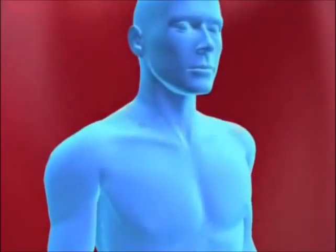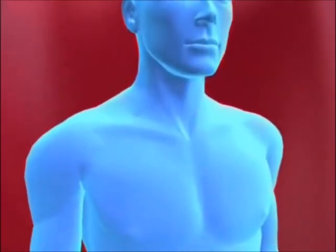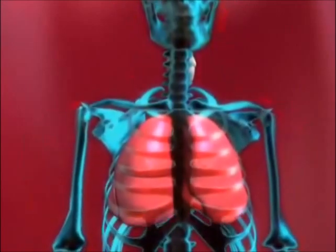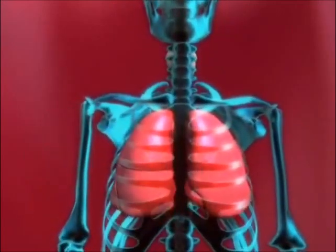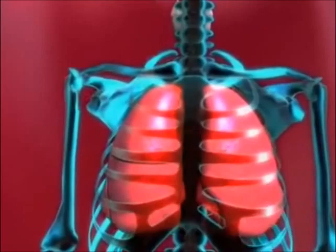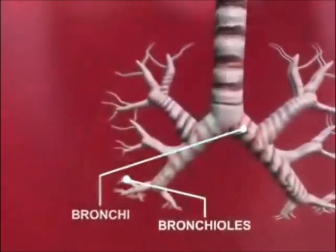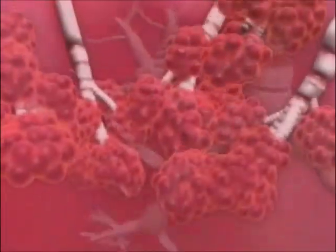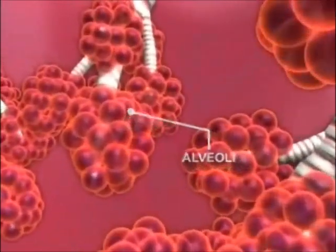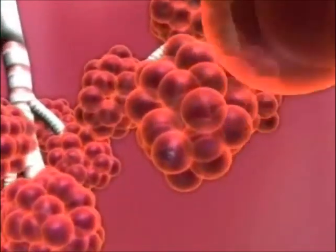During breathing, the air inhaled through the nose and mouth enters the respiratory passages. The air entering the respiratory system passes through the trachea, then splits into the bronchi, bronchioles, and finally enters tiny sacs called alveoli, where the exchange of gases takes place.